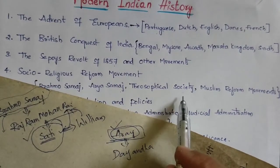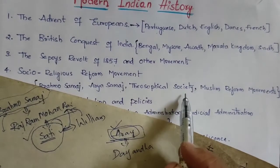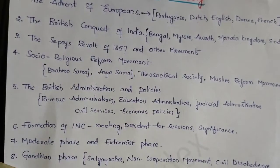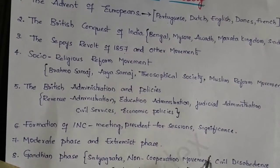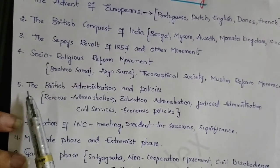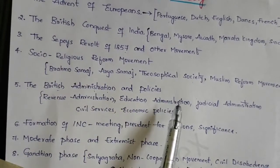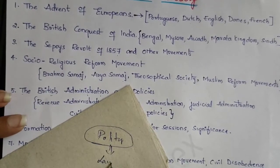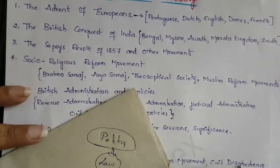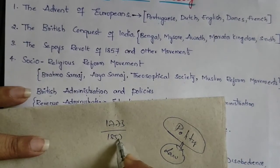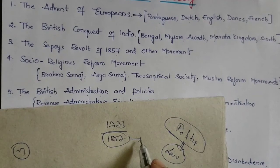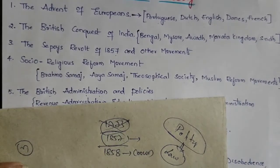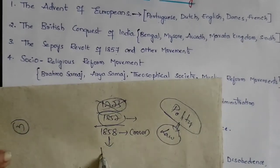The Theosophical Society is also part of the social religious movements. Next is British administration and policies, covering the legislative and law-making purpose — starting from the Regulating Act of 1773 up to 1857. In 1858, the Crown Rule began, ending Company Rule, and this continued until independence in 1947.